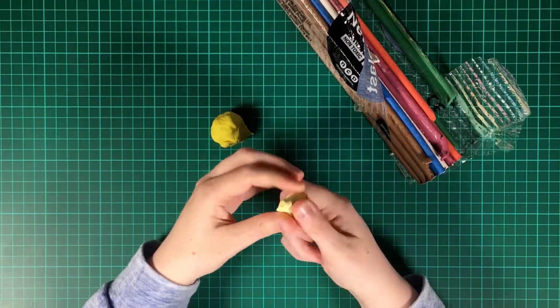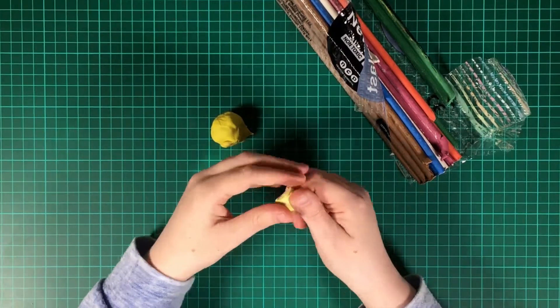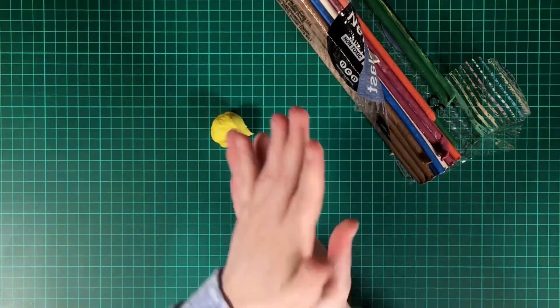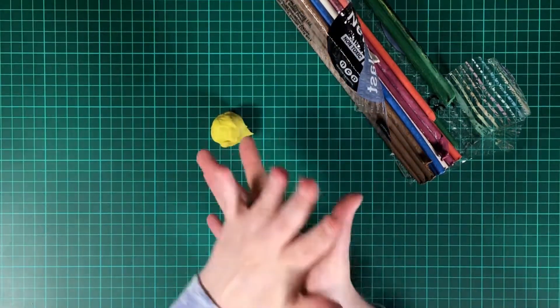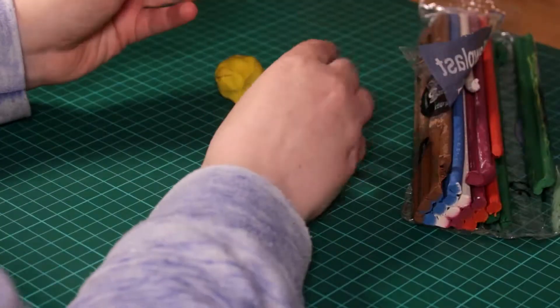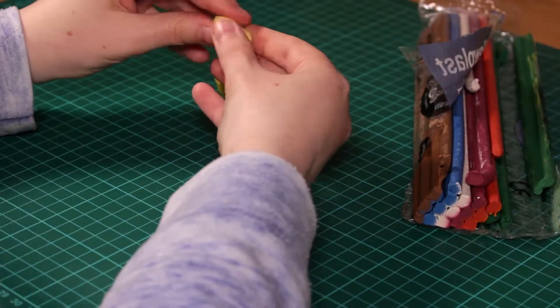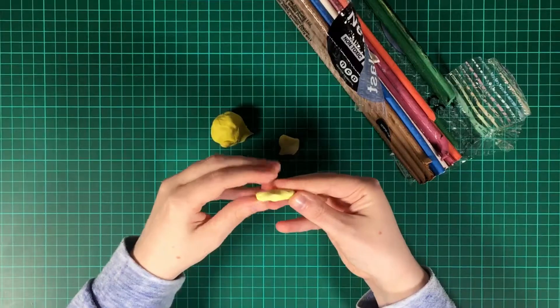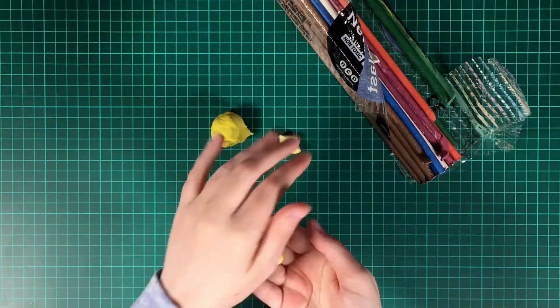Now, plasticine can be quite firm, but as soon as you start moulding it between your hands it will get warmer and soften up quite quickly. So if you're struggling to combine colours together, just persevere, roll it around in your hands, and before you know it you will have a consistent creamy yellow colour.